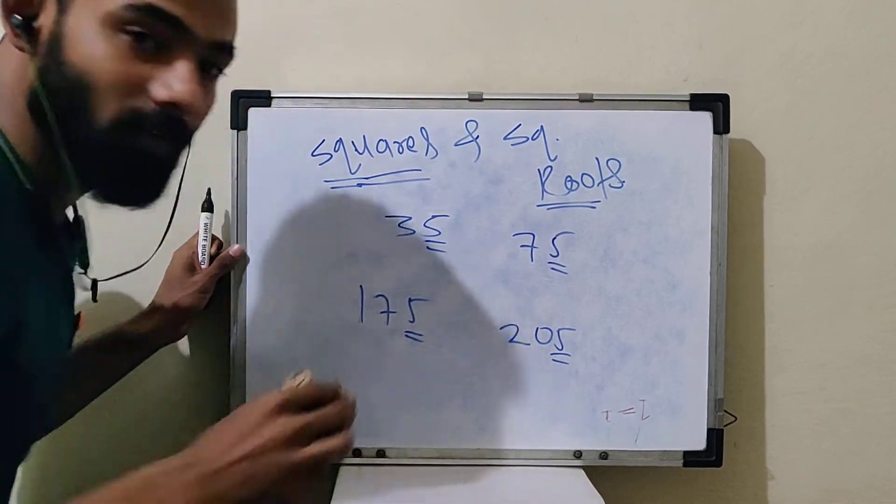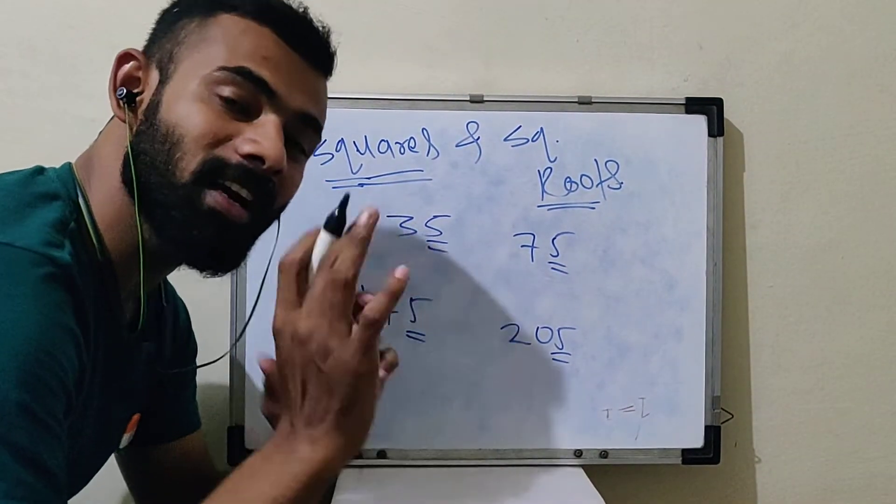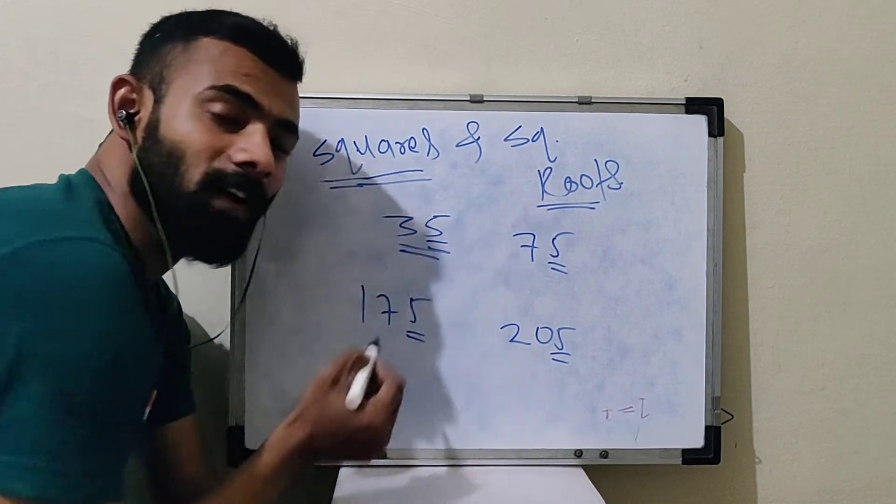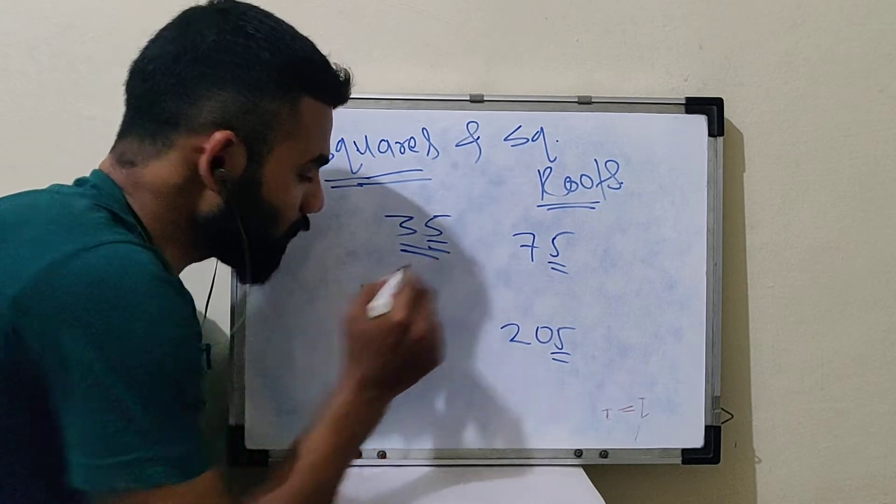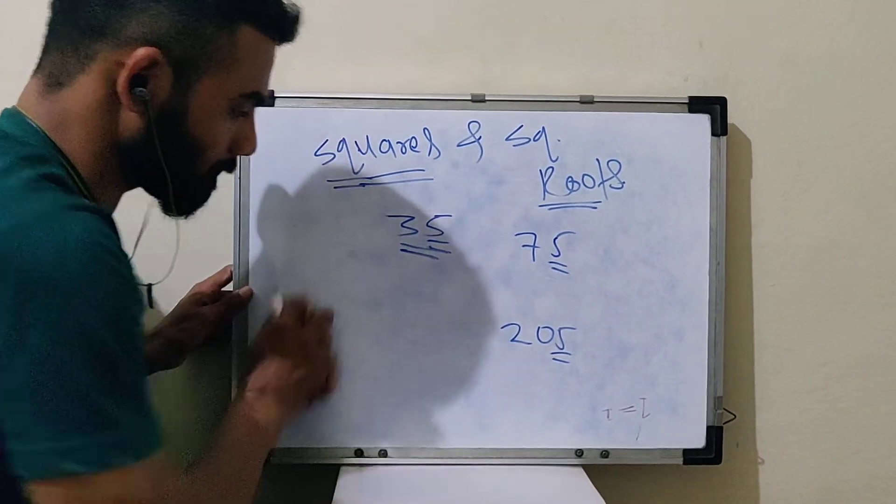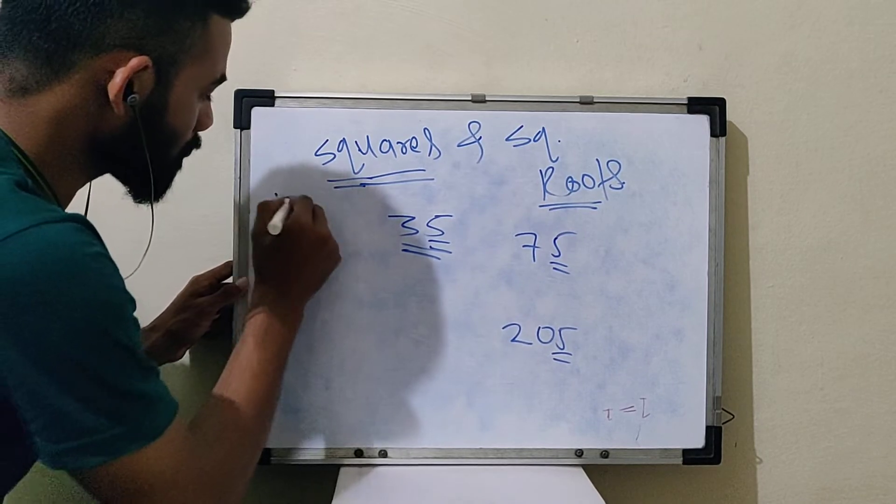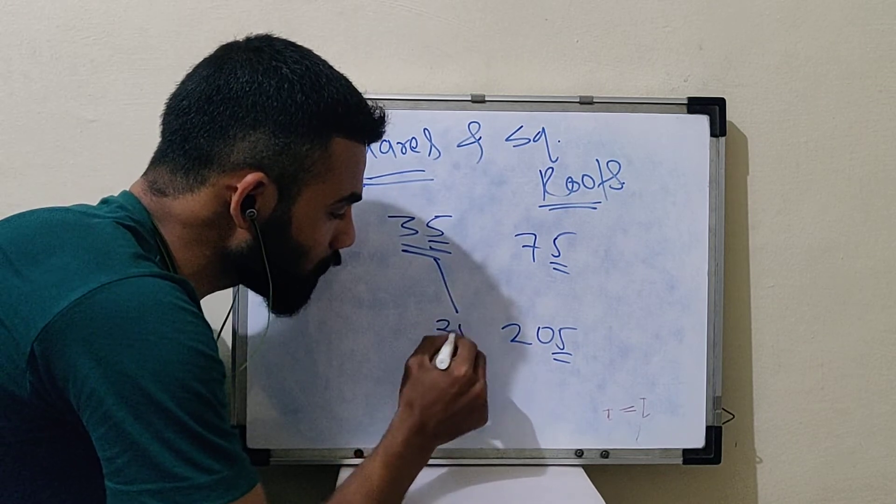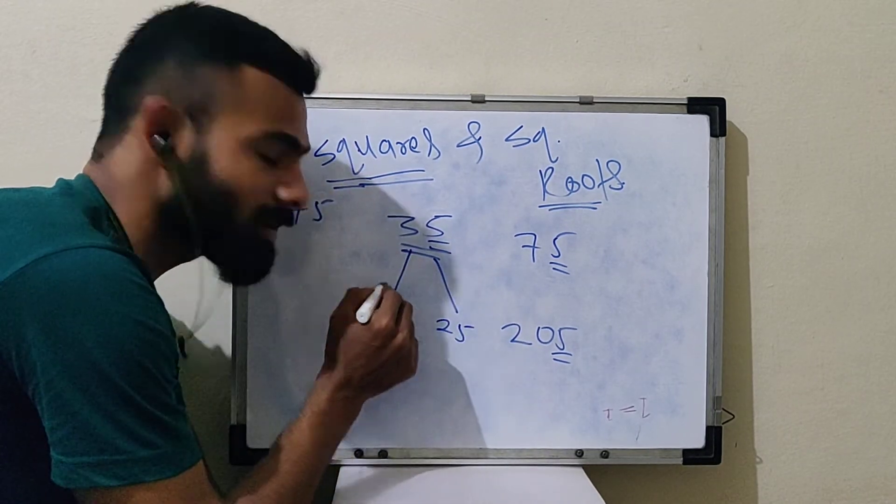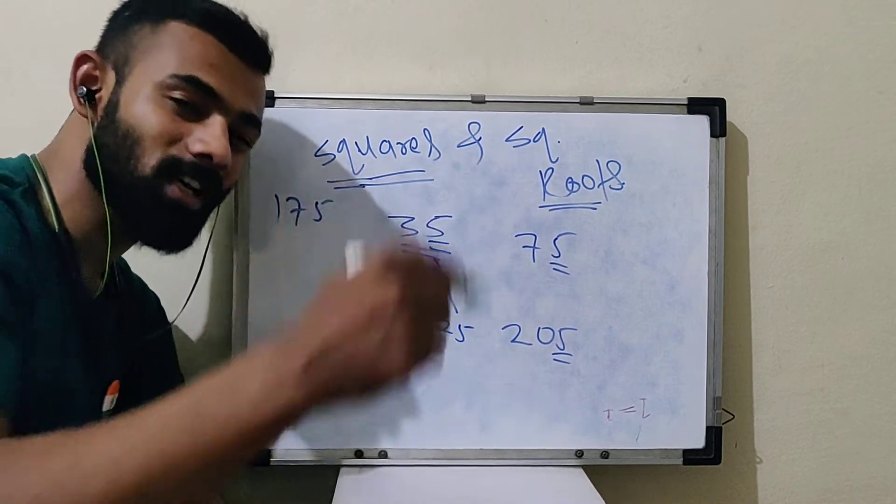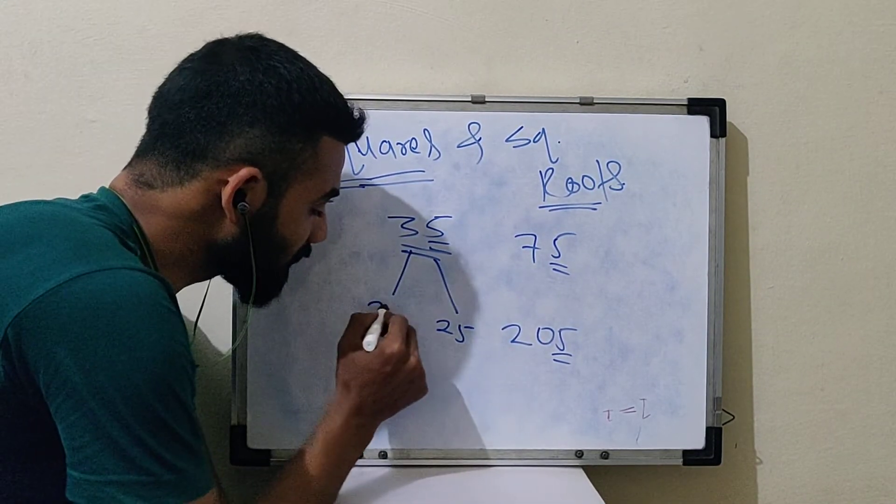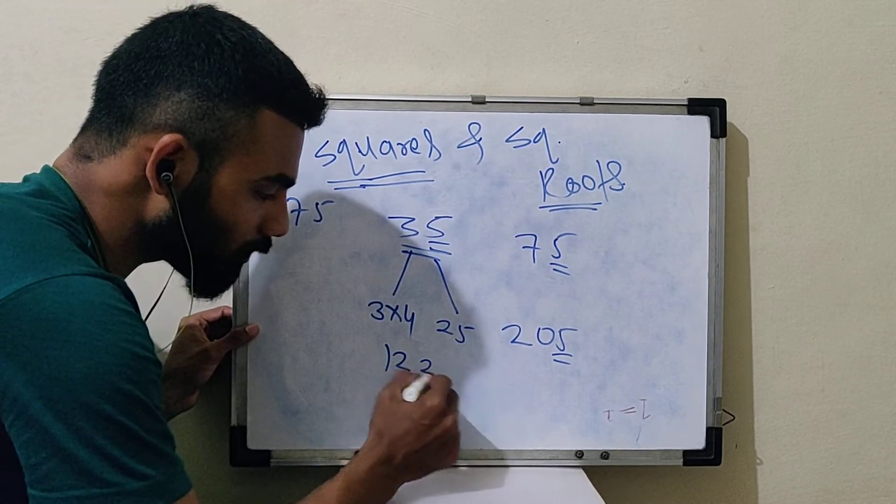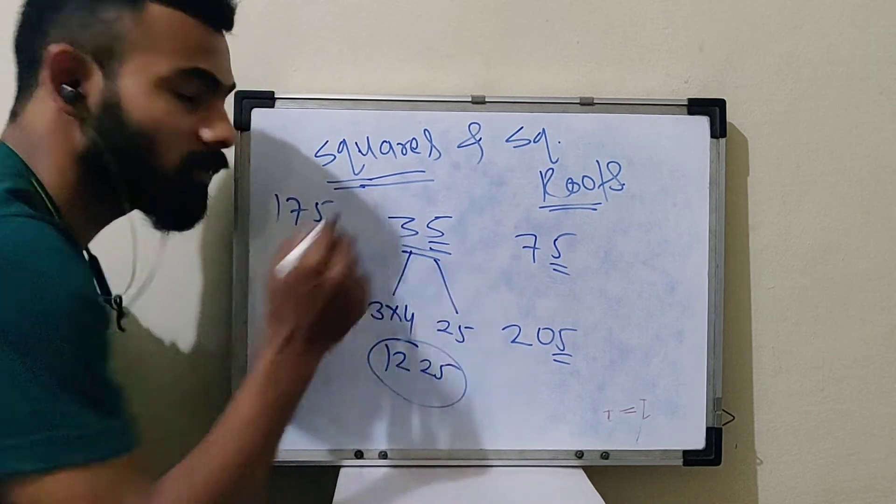For example, 35 is all the numbers which are ending with 5, how do we get squares from this? What do we do here? 3 multiplied by 4. This is the square of 35.